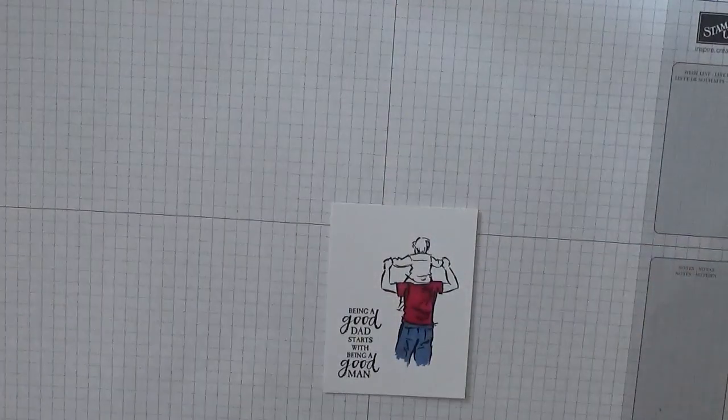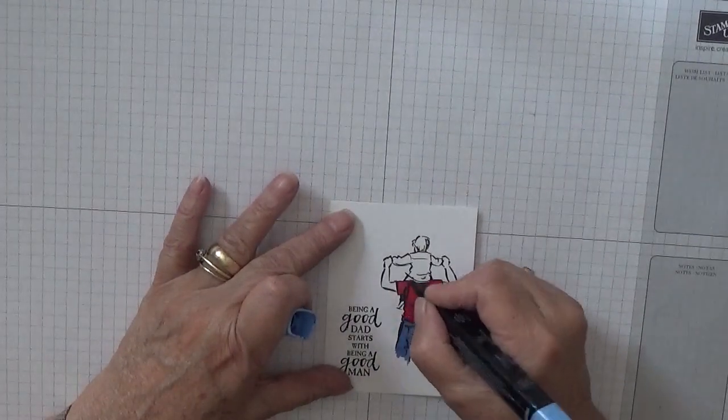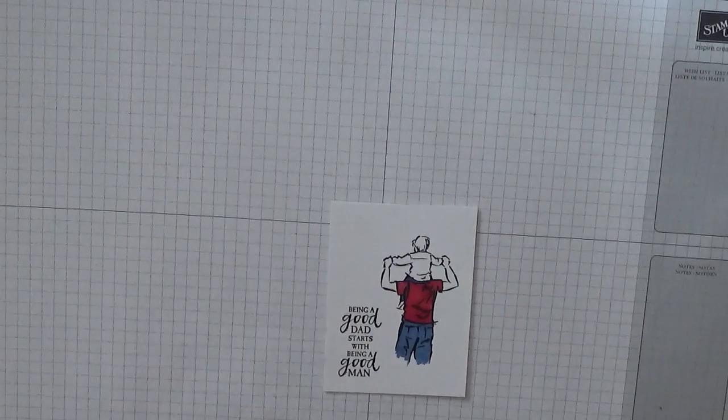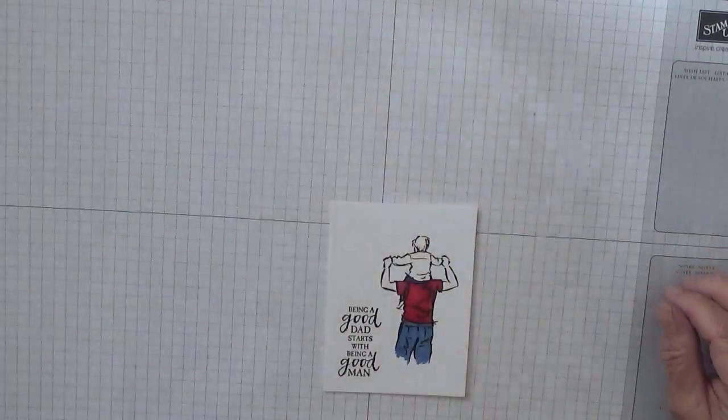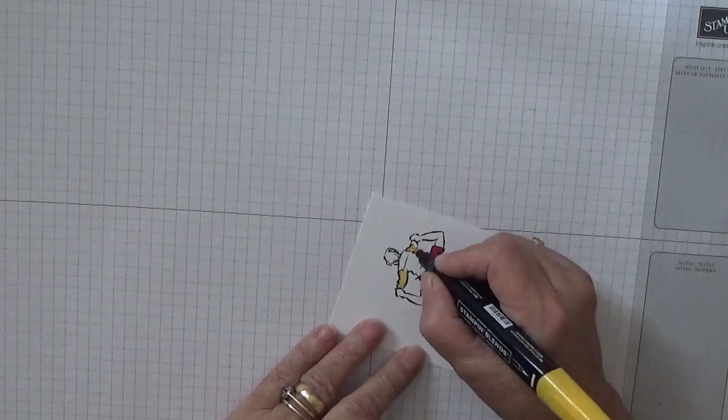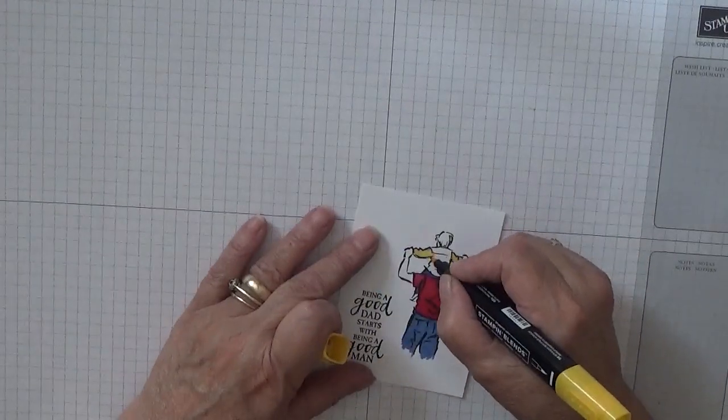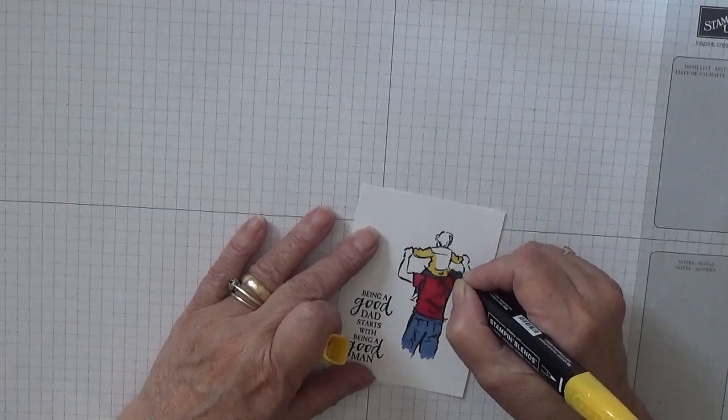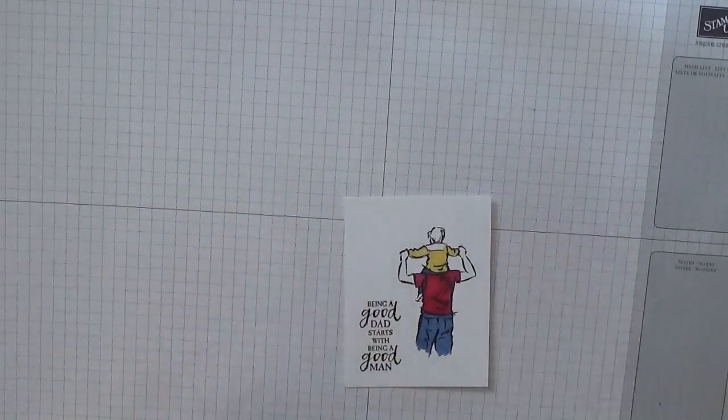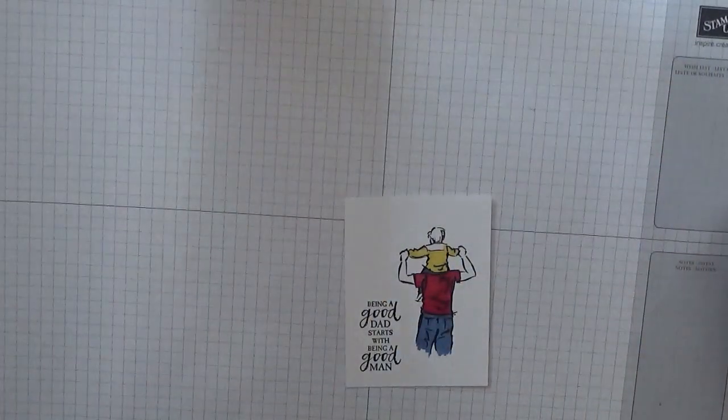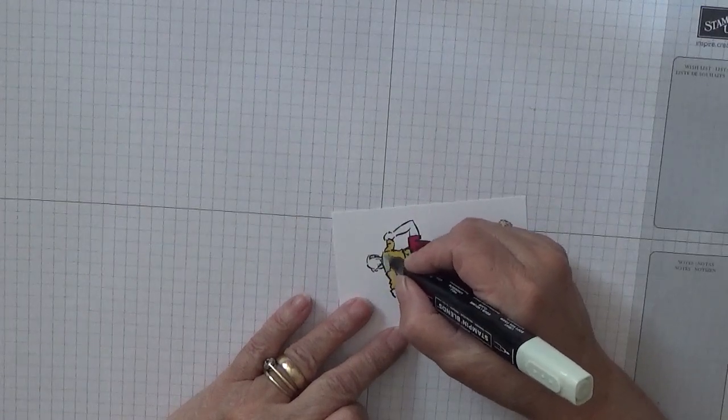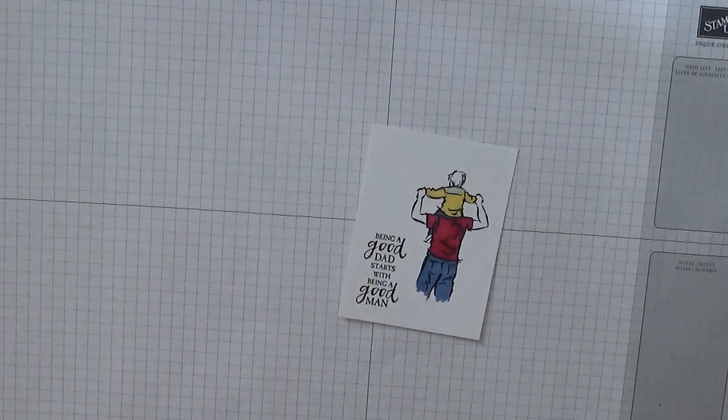And the little boy on top, he's got jeans on like his daddy. And he has got a yellow top on. So I'm using Daffodil Delight. And he's got like a collar, which I will do in light Soft Suede.